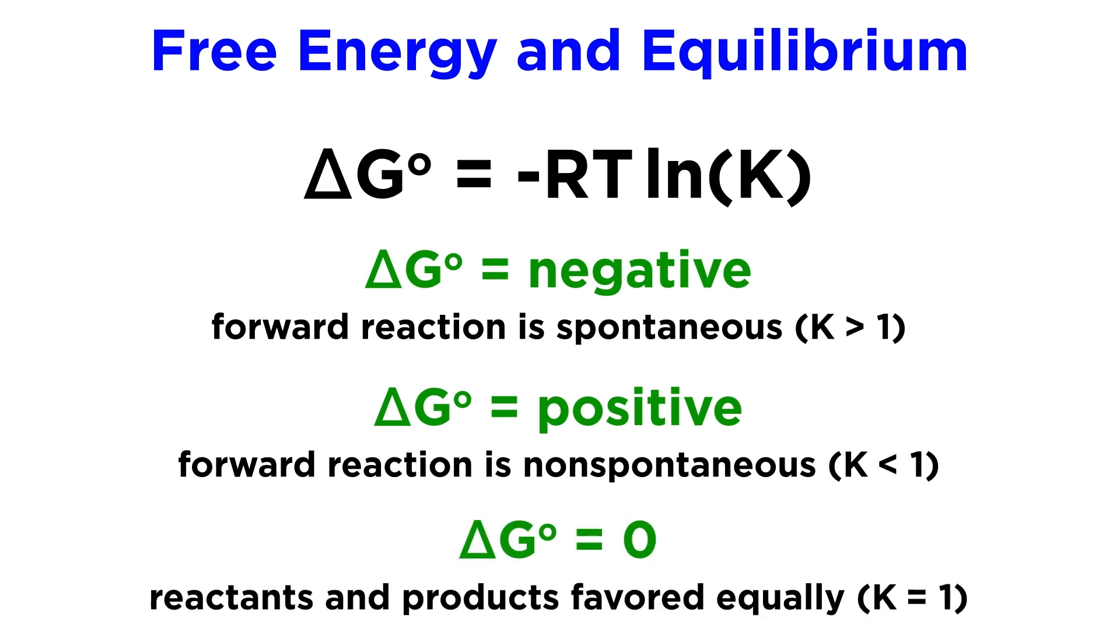And when equal to zero, reactants and products are equally favored, so the equilibrium constant equals precisely 1. This can be represented graphically by looking at the position of minimum free energy and observing whether it lies closer to reactants or products.